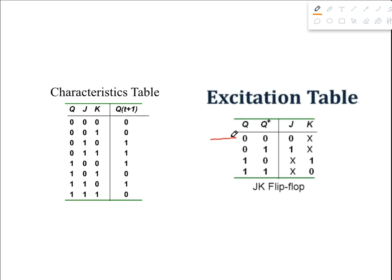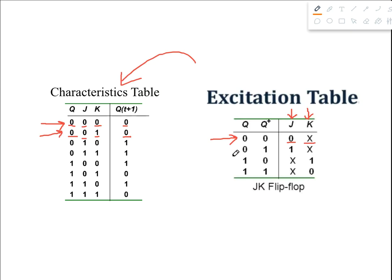For the first combination where present state is 0 and next state is 0, we go back to the characteristic table and find those rows where present state=0 and next state=0. In both such rows, J=0 in both cases, so we write 0 for J. However, K is 0 in one case and 1 in the other, so we cannot determine a specific value — we write don't-care for K.